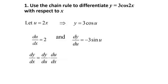The chain rule formula is dy/dx = dy/du × du/dx. Substituting our derivatives: dy/du = −3sin(u) and du/dx = 2. Multiplying: −3 × 2 = −6. Then substitute u = 2x back, since we want the answer in terms of x. The derivative is −6sin(2x).